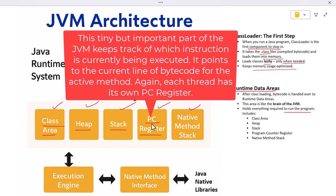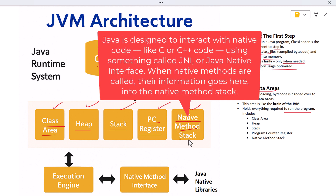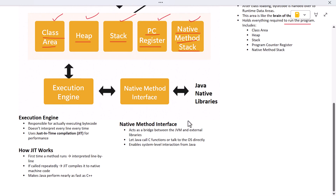Next is the program counter register, or just PC register. This tiny but important part of the JVM keeps track of which instruction is currently being executed — it points to the current line of bytecode for the active method. Again, each thread has its own PC register. Then we have the native method stack. Java is designed to interact with native code like C or C++ using something called JNI, or Java Native Interface. When native methods are called, their information goes here into the native method stack.